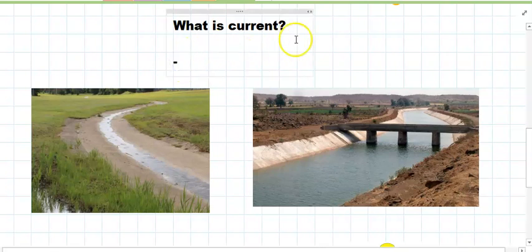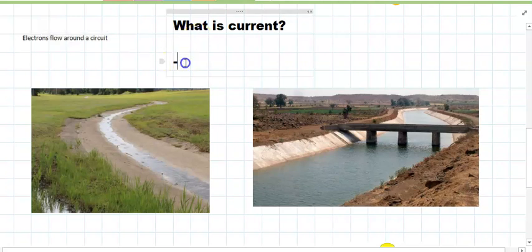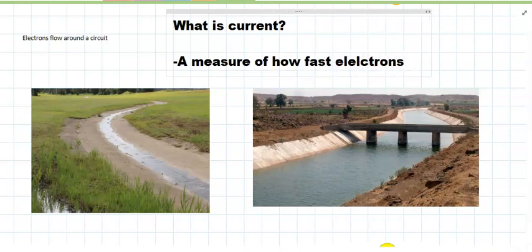So we've learned about electrical circuits and we know that electrons flow around a circuit, and current is really just measuring how quickly the electrons are flying around the circuit. So current is a measure of how fast electrons are moving around the circuit.